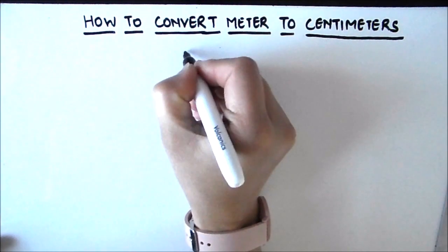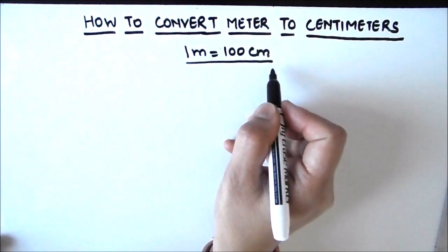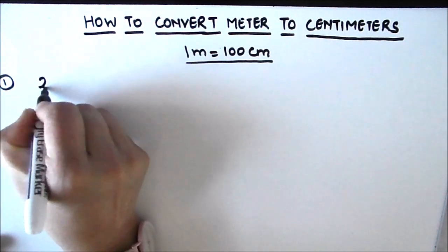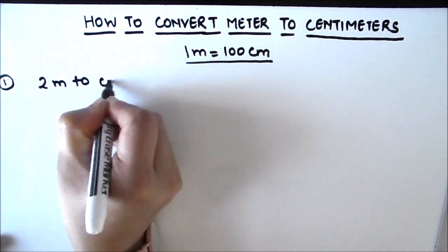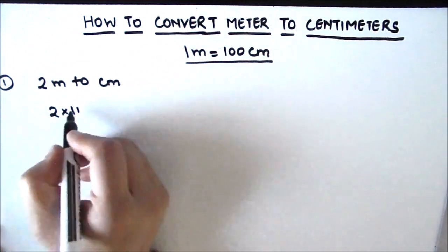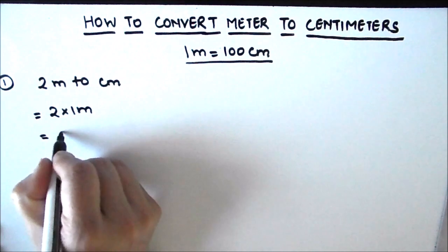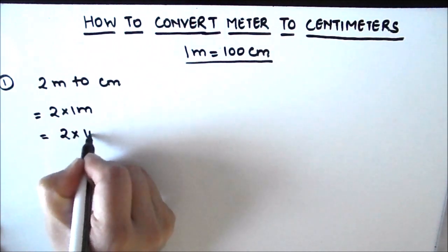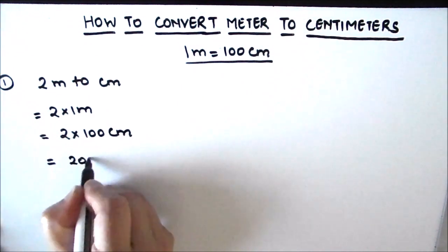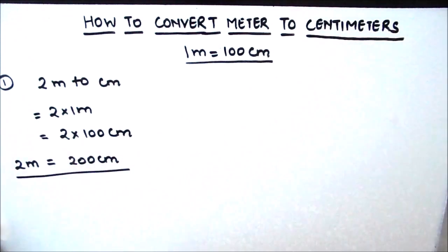We all know that one meter is equal to 100 centimeters — this is the conversion we are going to use. Our first example is to convert 2 meters to centimeters. We can write 2 meters as 2 times 1 meter, and since 1 meter is 100 centimeters, 2 meters equals 2 times 100 centimeters, which is 200 centimeters.